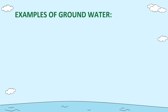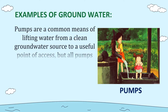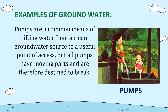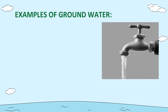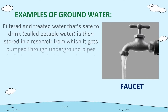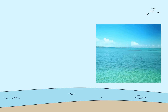Another example of groundwater is water from pumps. Pumps are a common means of lifting water from a clean groundwater source to a useful point of access, but all pumps have moving parts and are therefore destined to break. Another example is water from a faucet. Filtered and treated water that is safe to drink — called potable water — is stored in a reservoir, then pumped through underground pipes called water mains to your house. A service lateral line connects the water main to your house plumbing, bringing water right to your faucet when you turn it on.